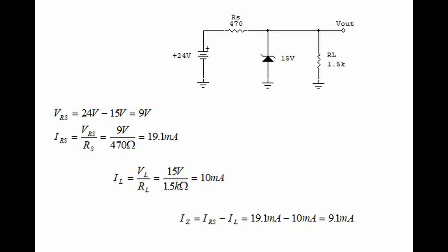Let's begin by finding the voltage across the 470-ohm series resistor — in this case 24 volts minus 15 volts, which is 9 volts. Next, we find the current through the series resistor: 9 volts divided by 470 ohms gives 19.1 milliamps, which is also the total circuit current. The current through the load is 15 volts divided by 1.5 kilohms, which equals 10 milliamps.